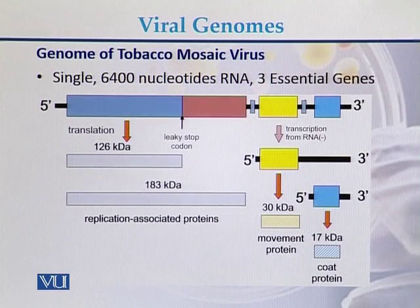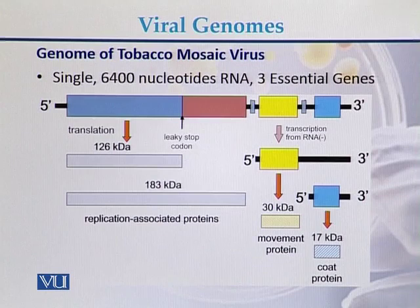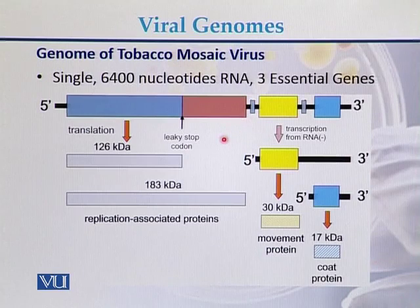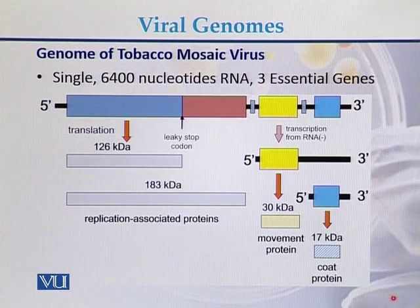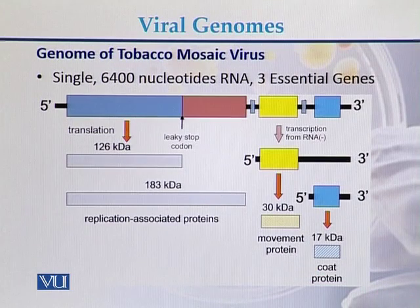The genome of tobacco mosaic virus is approximately 6,400 nucleotides in size. There are three essential genes on this genome: one gene encoding a replication-associated protein, another responsible for movement protein production, and a third encoding coat proteins.